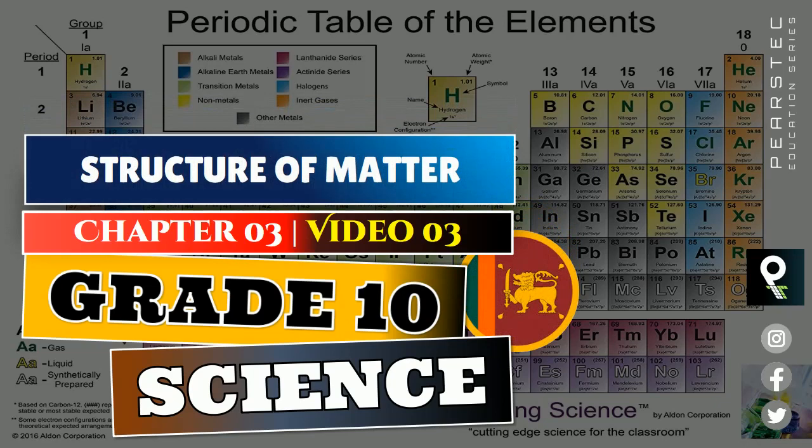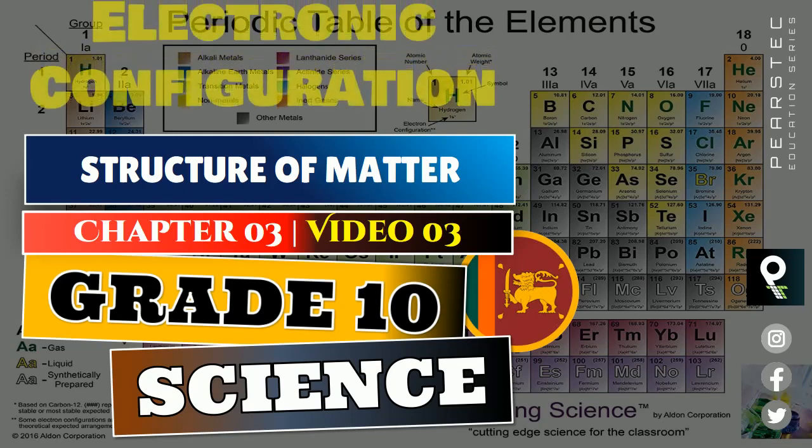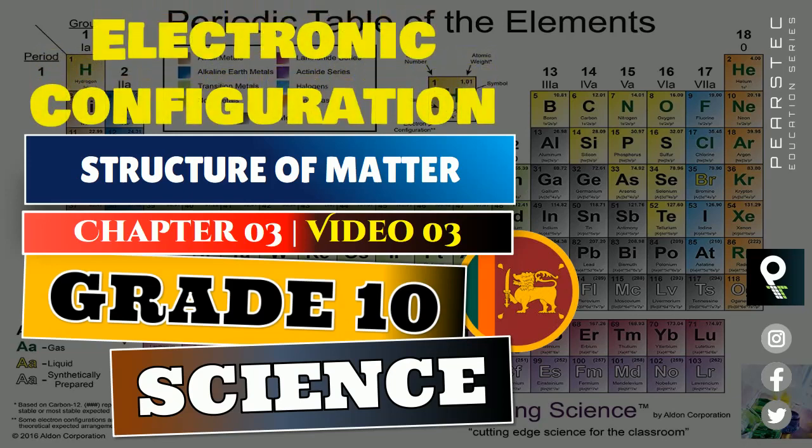Structure of matter is the lesson that we have been learning, and we learned about atomic number and the mass number in our previous session. And this session, we are going to talk about electronic configuration.